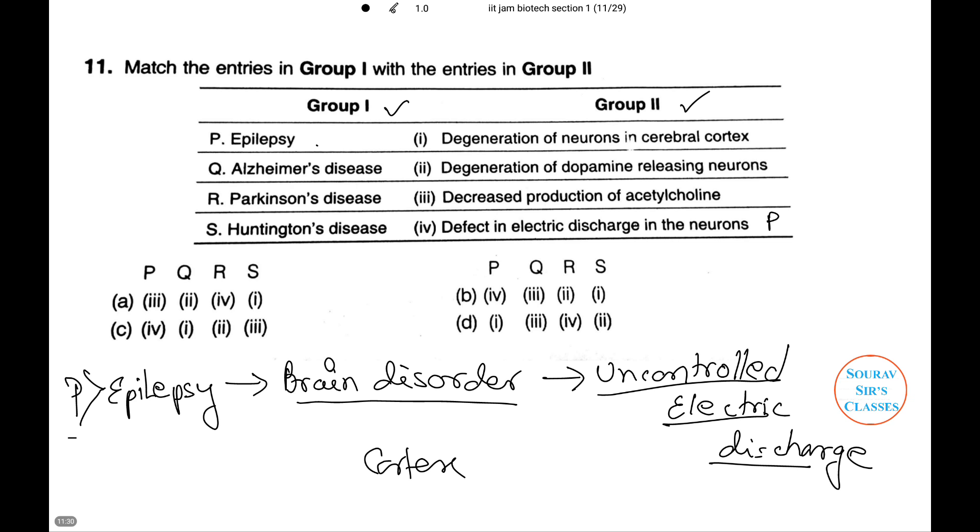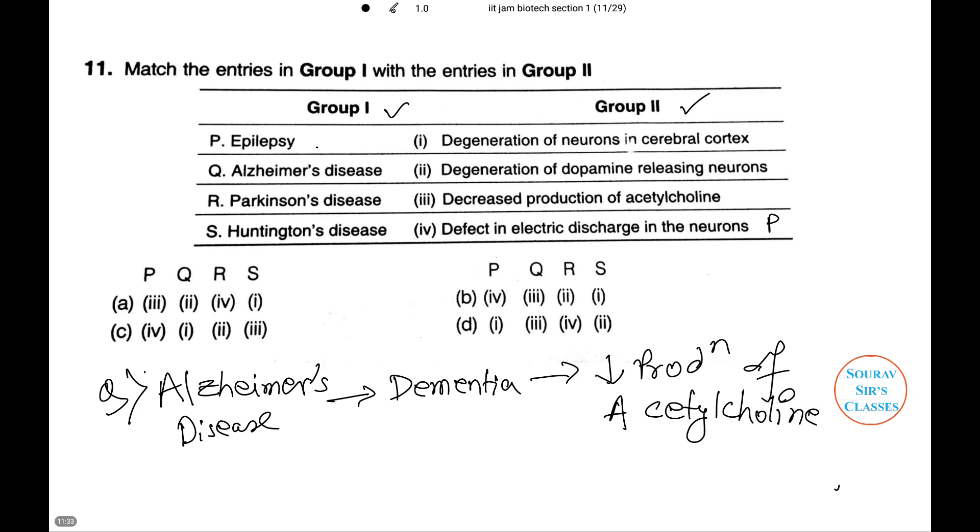Now, next we'll consider Alzheimer's. Alzheimer's disease is the most common form of dementia. This is caused due to decreased production of the neurotransmitter acetylcholine. This is responsible for our vital memory and learning. Thus, number 3 is the answer of Q.